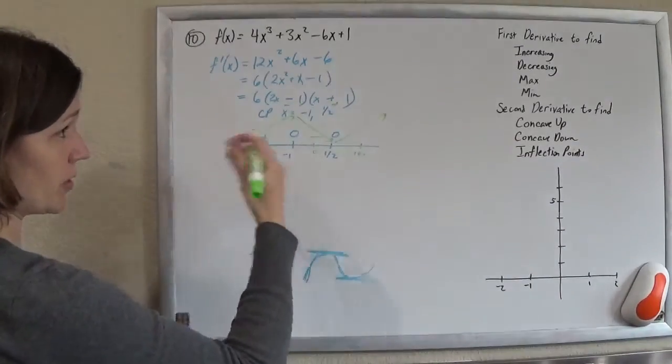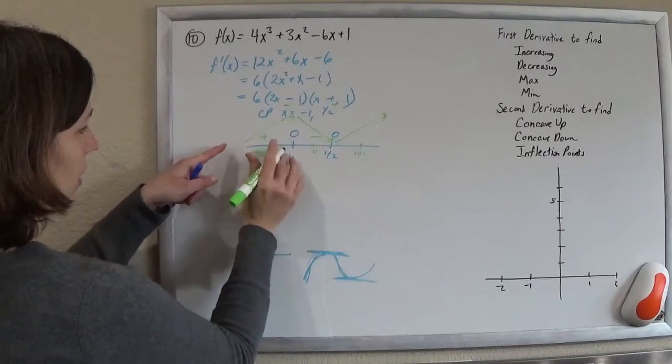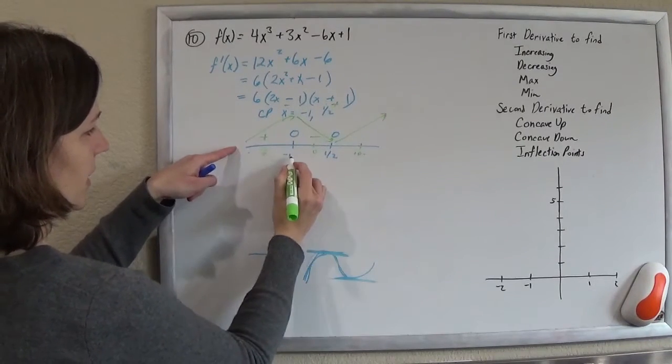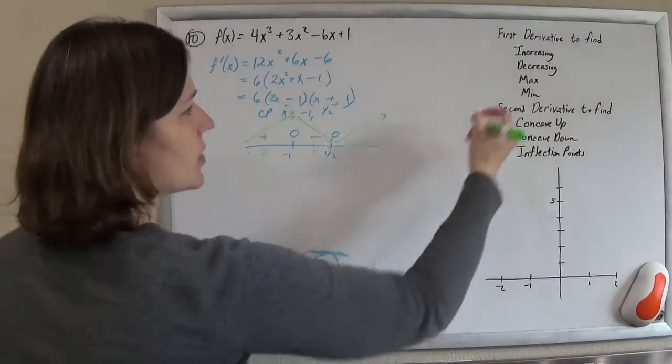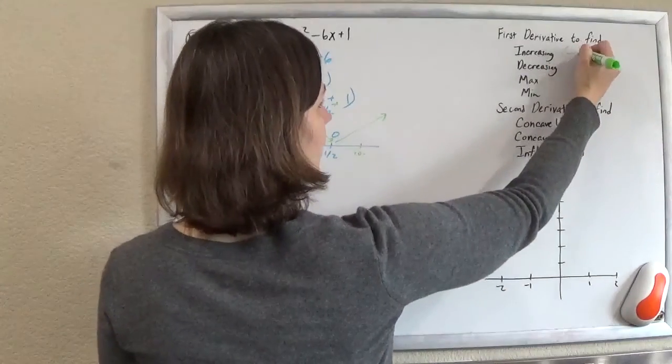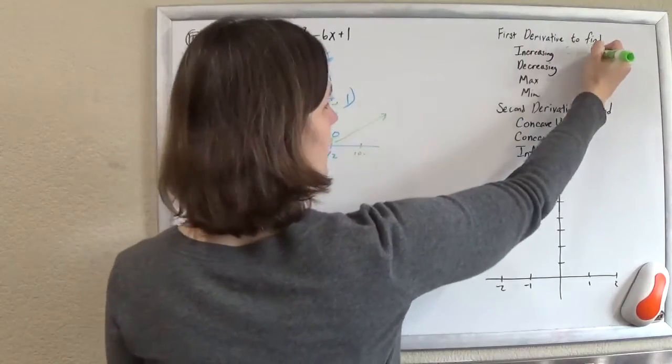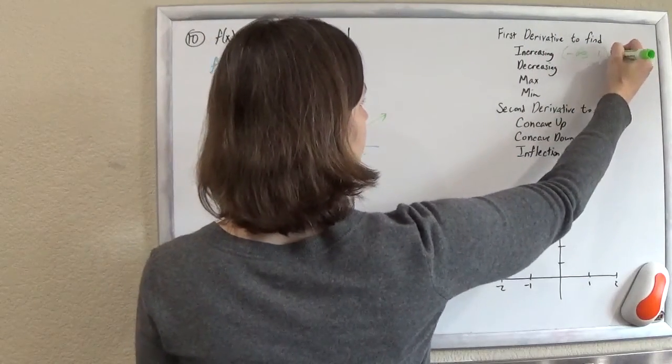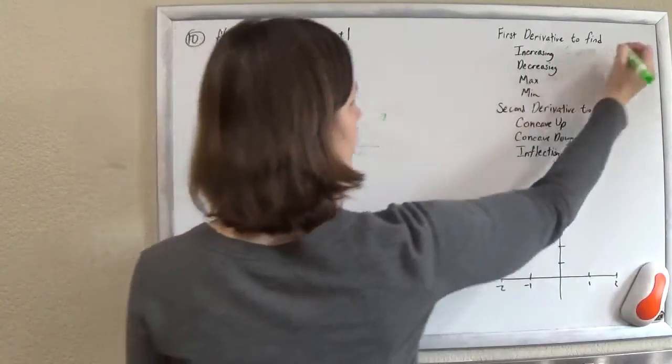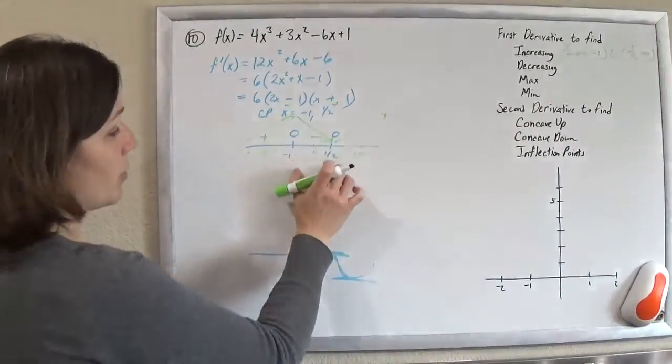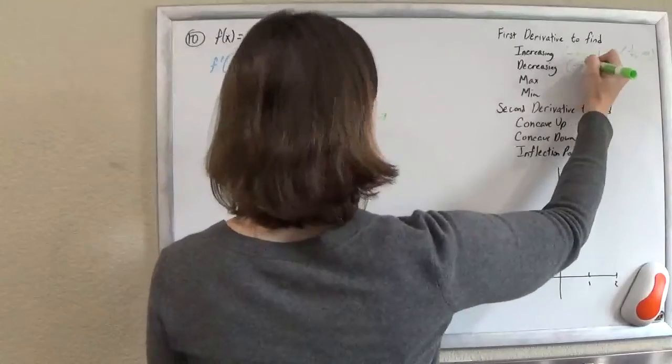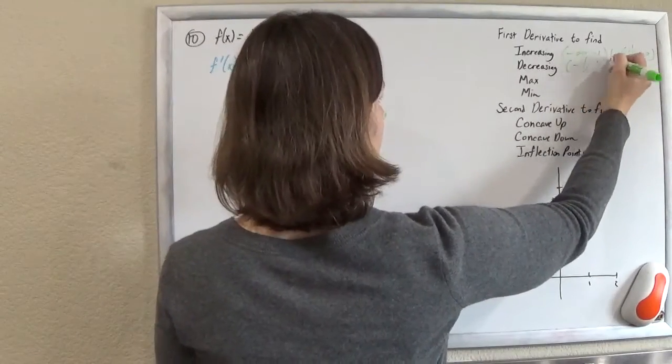So therefore, we can answer the intervals of increase. So we're increasing from negative infinity to negative 1, and from x values from 1/2 to infinity. So our intervals, x from negative infinity to negative 1, unite that with 1/2 to infinity, and we're decreasing on the interval negative 1 to 1/2, so when the x's are going from negative 1 to 1/2.